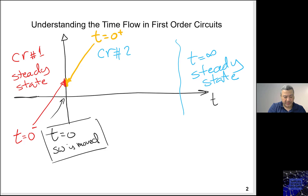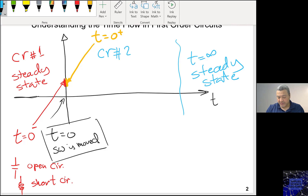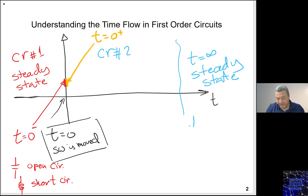In circuit number one, which is steady state, capacitors act as an open circuit and inductors act as a short circuit. The same applies for the steady state at t equals infinity in circuit number two: capacitors are replaced by open circuits, and inductors are replaced by short circuits.